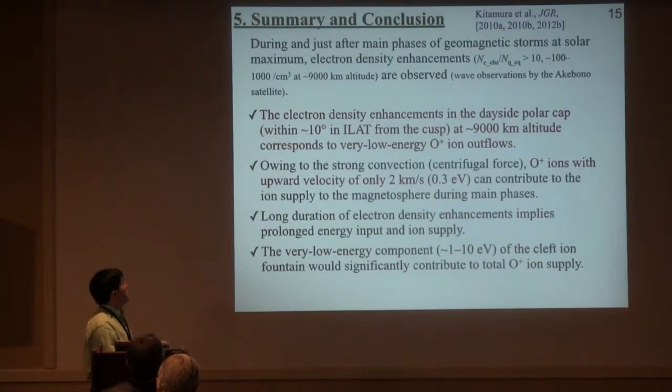This is a summary. During and just after the main phase of geomagnetic storms at solar maximum, electron density enhancements are observed based on wave observation by the Akebon satellite. The electron density enhancements in the dayside polar cap at about 9000 km altitude correspond to very low energy oxygen ion outflow.